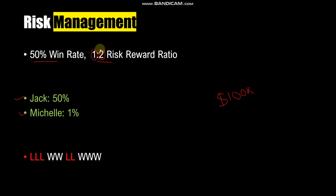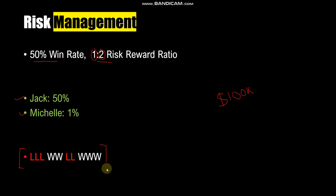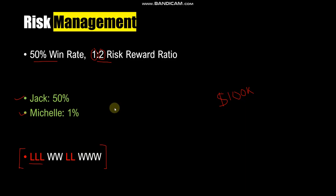That means they risk one dollar to gain two dollars — that is the 1:2 reward ratio. With a win rate of 50%, let's take an example of 10 days: the first three days are losses, then two days of wins, two days of loss, and three days of straight wins. Three consecutive losses is not impossible in the market — that usually happens.